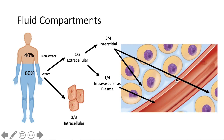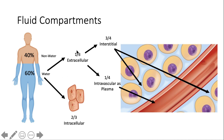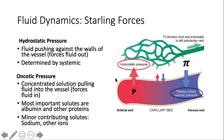Now let's move on to fluid compartments. 60% of the body is water, and knowing where that water is helps us determine how blood pressure functions and where edema comes from. Two-thirds of body water is intracellular; only one-third is extracellular. Of that extracellular fluid, three-fourths is interstitial and one-fourth is intravascular as plasma. Fluid can shift between these compartments via Starling forces, which determine fluid dynamics.